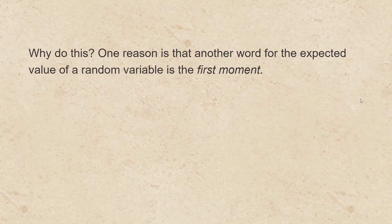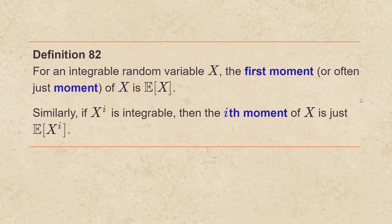Why do this? One reason is that another word for the expected value of a random variable is the first moment. For an integrable random variable x, the first moment, or often just moment of x, is the mean of x. Similarly, if x to the i is integrable, then the i-th moment of x is just the mean of x raised to the i-th power.